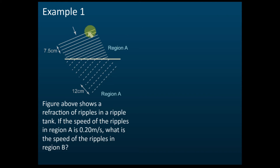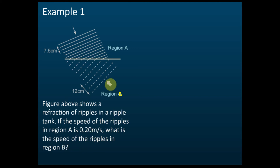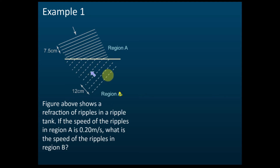Okay, now let's see Example 1. We have region A and region B. The figure shows reflections of ripples in a ripple tank. If the speed of ripples in region A is 0.2 m/s, what is the speed in region B? From the diagram, can you tell which region is deeper — A or B? Region B is deeper, because the wavelength is longer. The waves in region A are closer together, meaning a shorter wavelength.